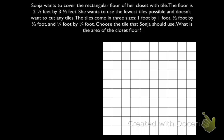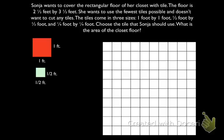Let's look at this problem. Sonia wants to cover the rectangular floor of her closet with tile. The floor is two and a half feet by three and a half feet. She wants to use the fewest tiles possible and doesn't want to cut any tiles. The tiles come in three sizes: one foot by one foot, half foot by half foot, and quarter foot by quarter foot. Choose the tile that Sonia should use. What is the area of the closet floor?